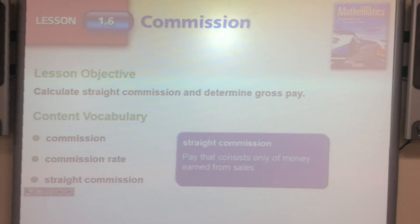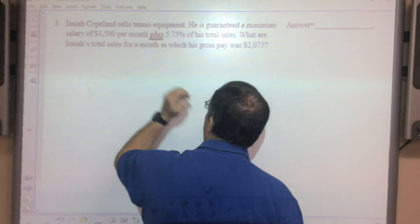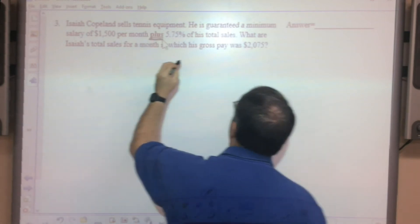Commission rate is a specified amount of money paid for each sale or percent of the total. Straight commission is your job is nothing but commission, you don't get anything else.